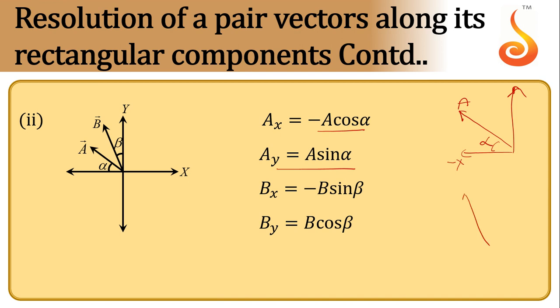Another vector B subtends an angle beta with the y-axis. You can notice that its x component is along the negative x-axis and y component is positive. So, y component is B cos beta and x component is minus B sin beta.